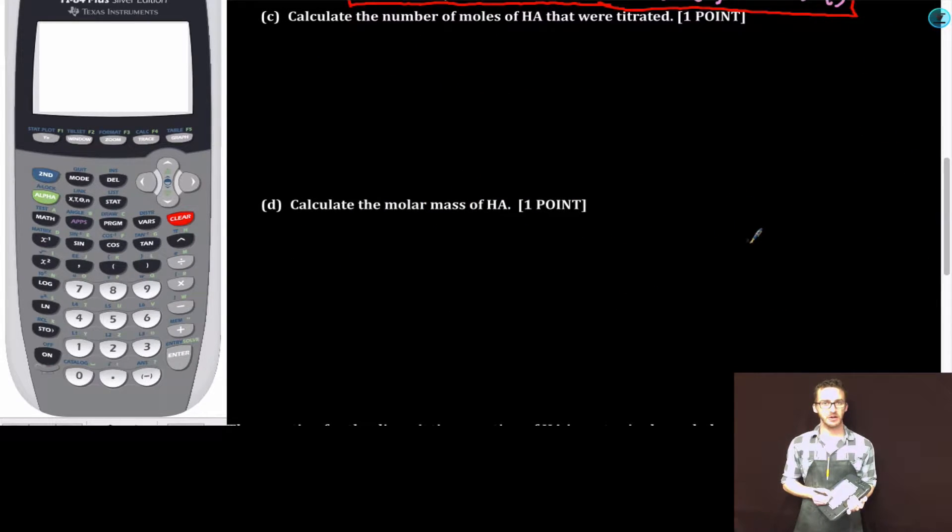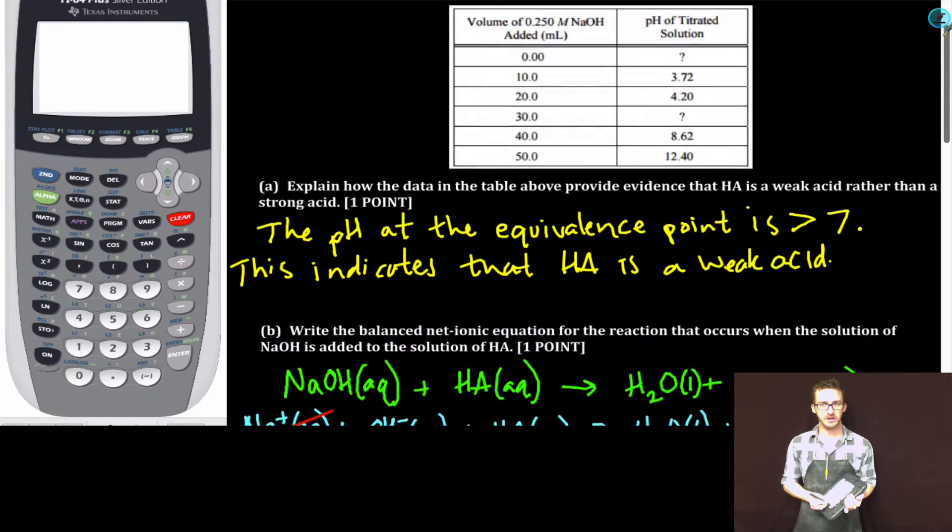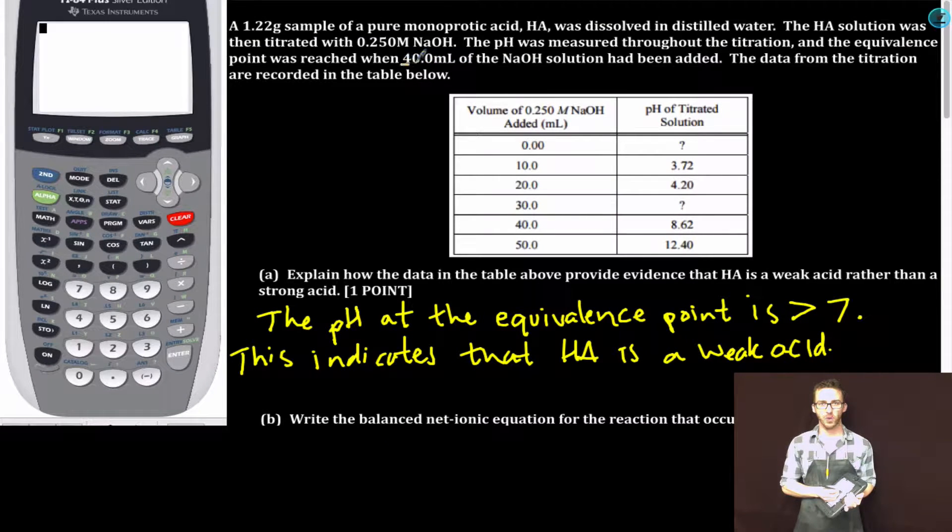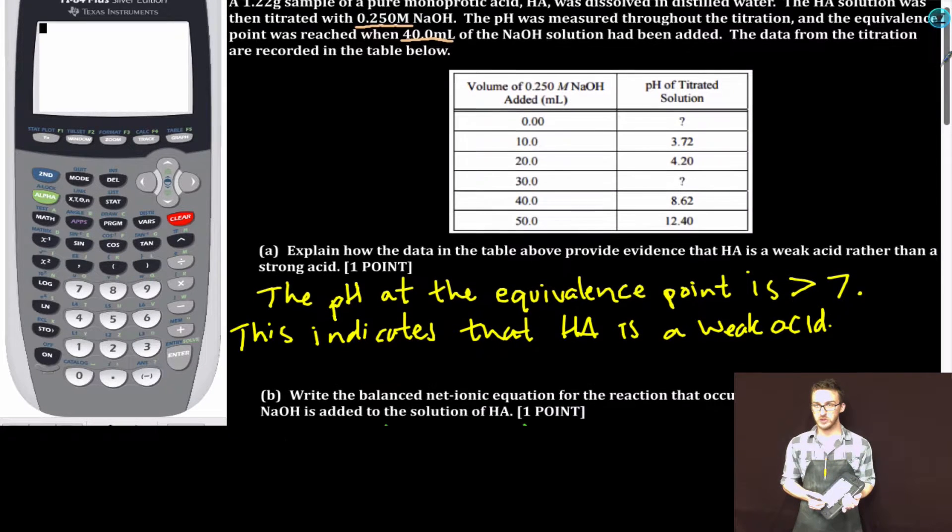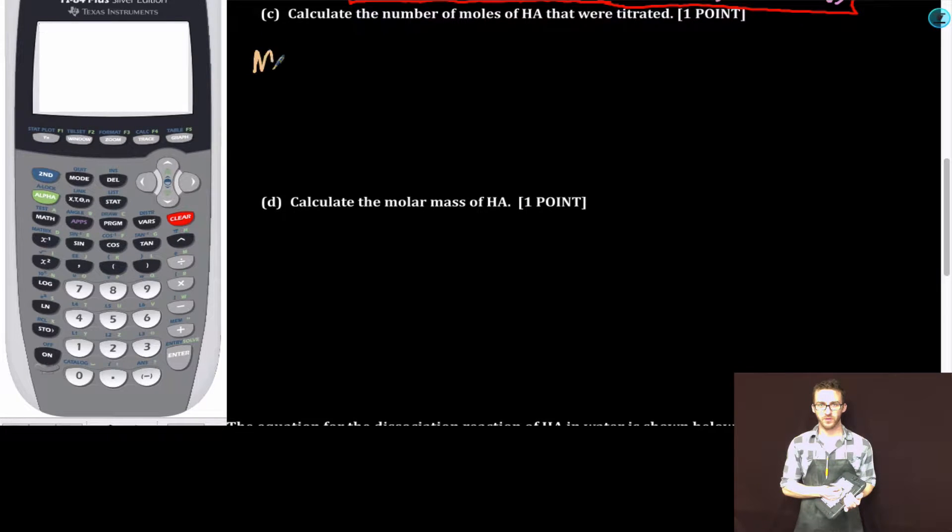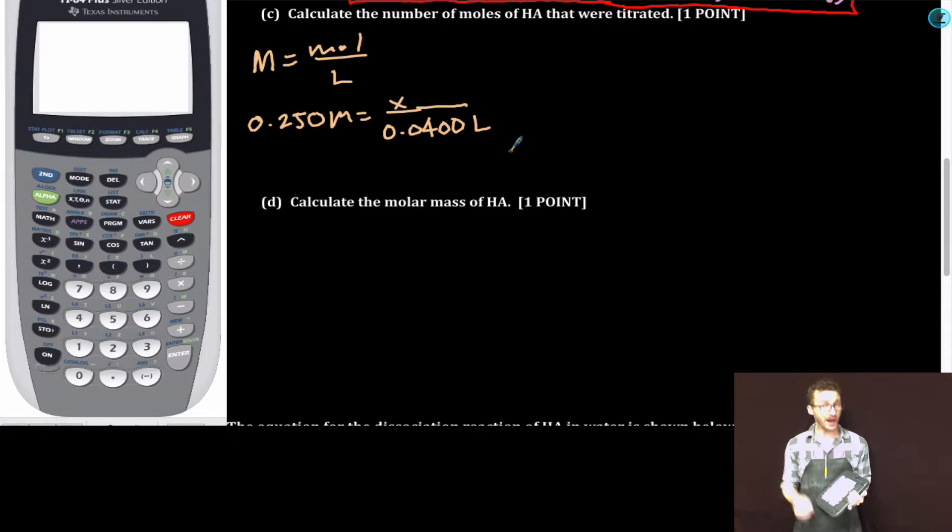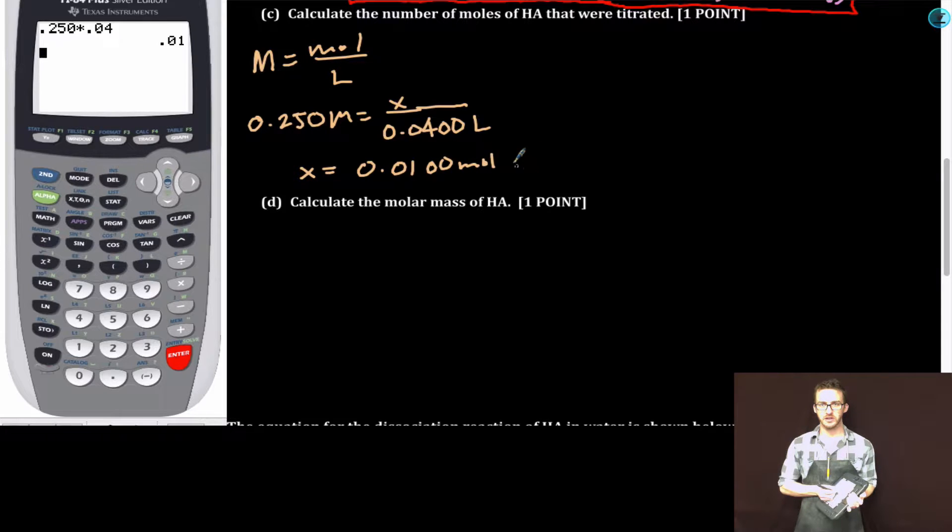Part C: Calculate the number of moles of HA that were titrated. Well, if you go back up to the introduction, realize that it took us 40 milliliters of our 0.25 molar sodium hydroxide solution to reach the equivalence point. So using my formula for molarity, I'm going to plug in those values to solve for the number of moles of sodium hydroxide that were required to neutralize all of the HA. X equals 0.0100 moles sodium hydroxide.